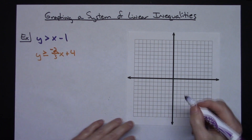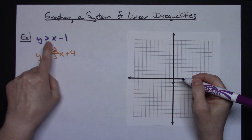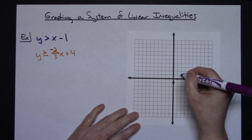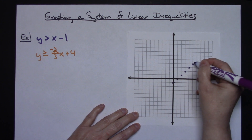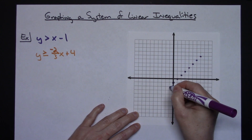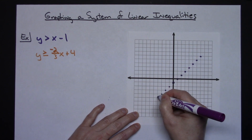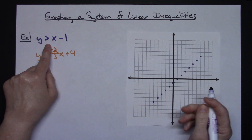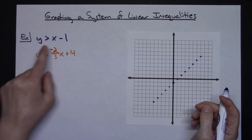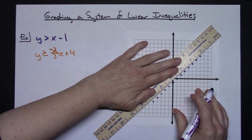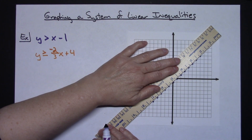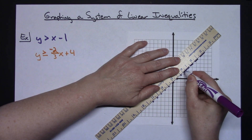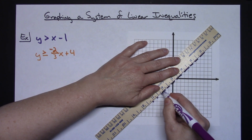In slope-intercept form, my y-intercept is at negative 1, so I'm going to put a dot at negative 1. My slope is 1 over 1, so I'll do rise over run to generate my slope and put several points on there. Now looking at that sign — since it's a greater than sign, it means the line is dotted.